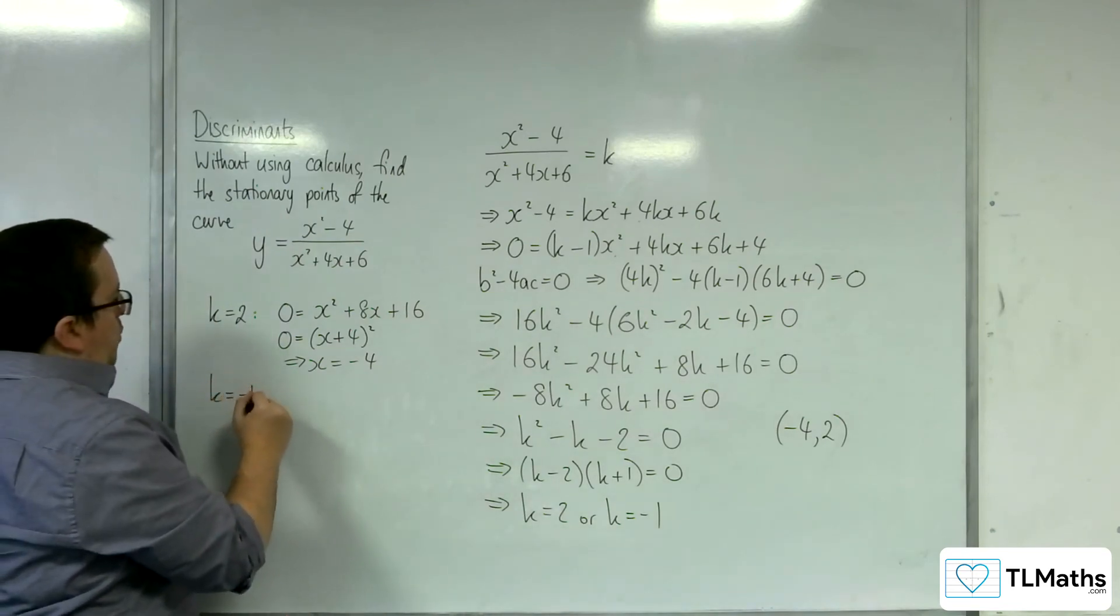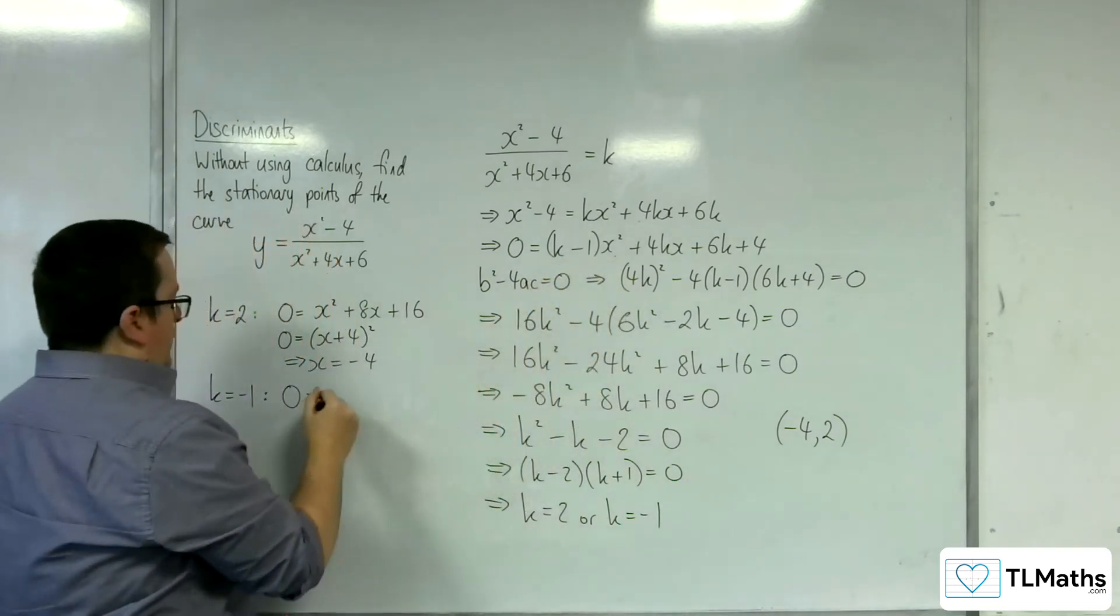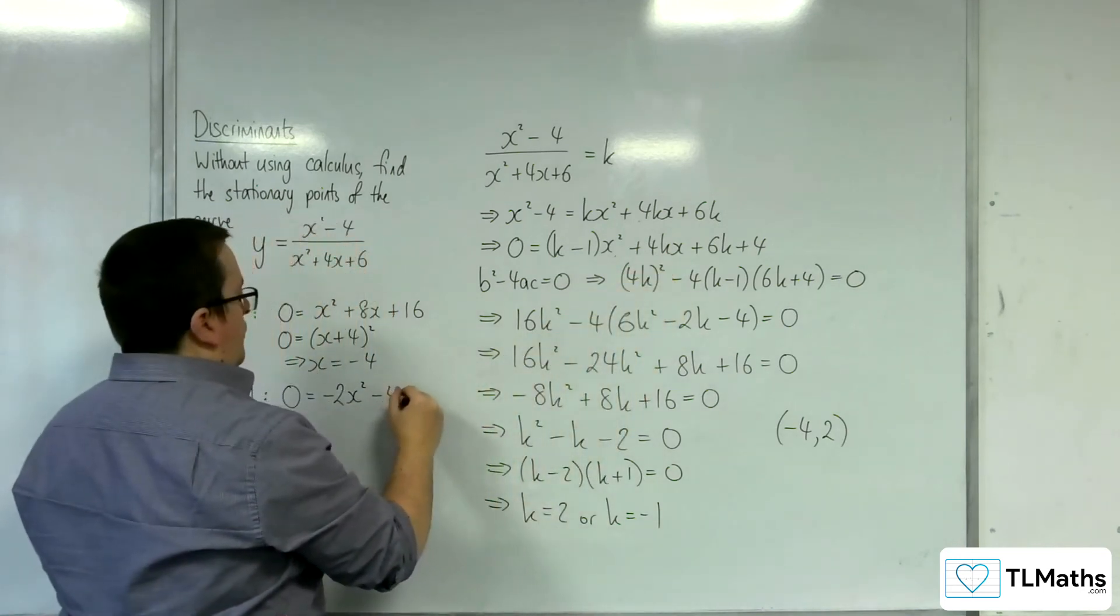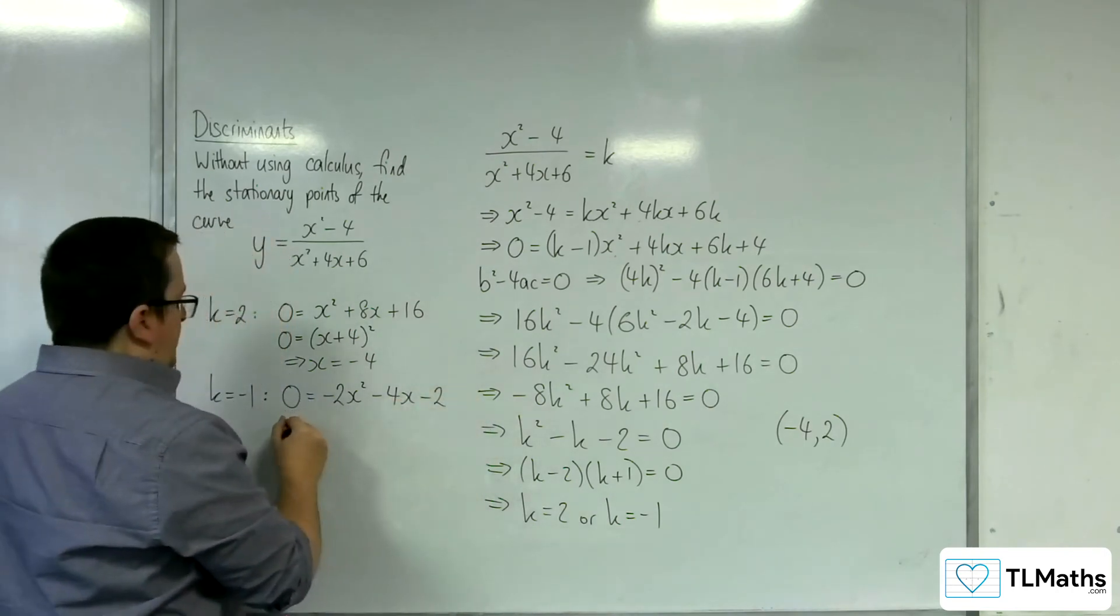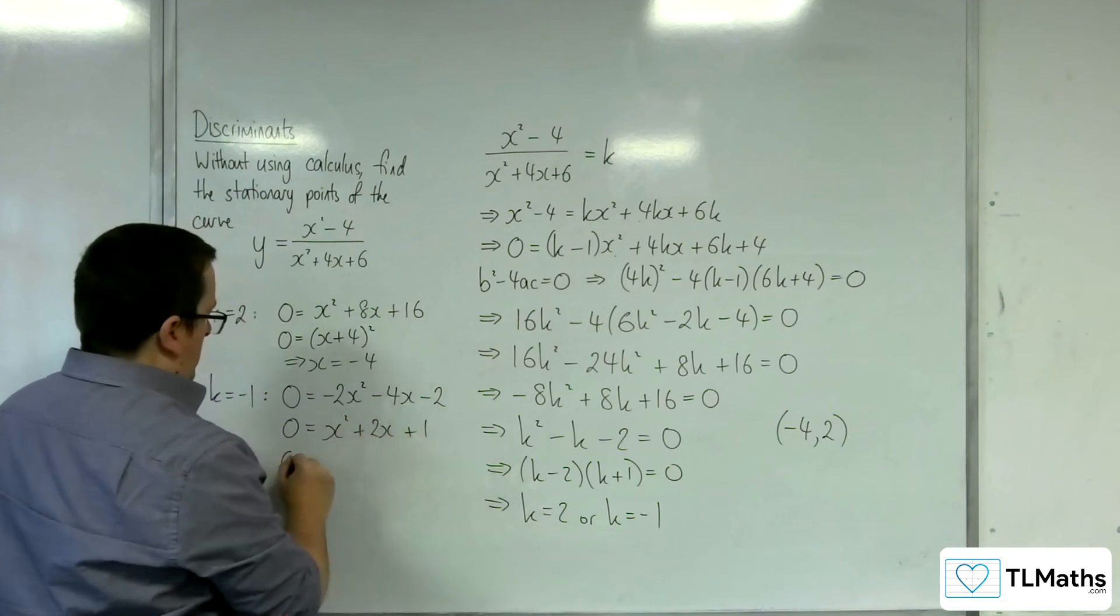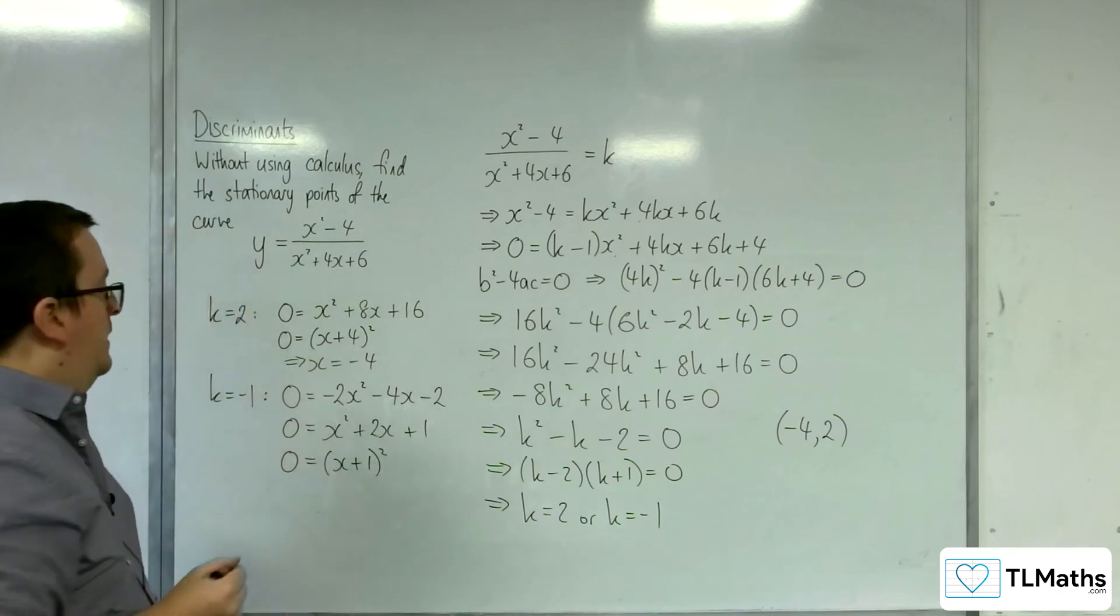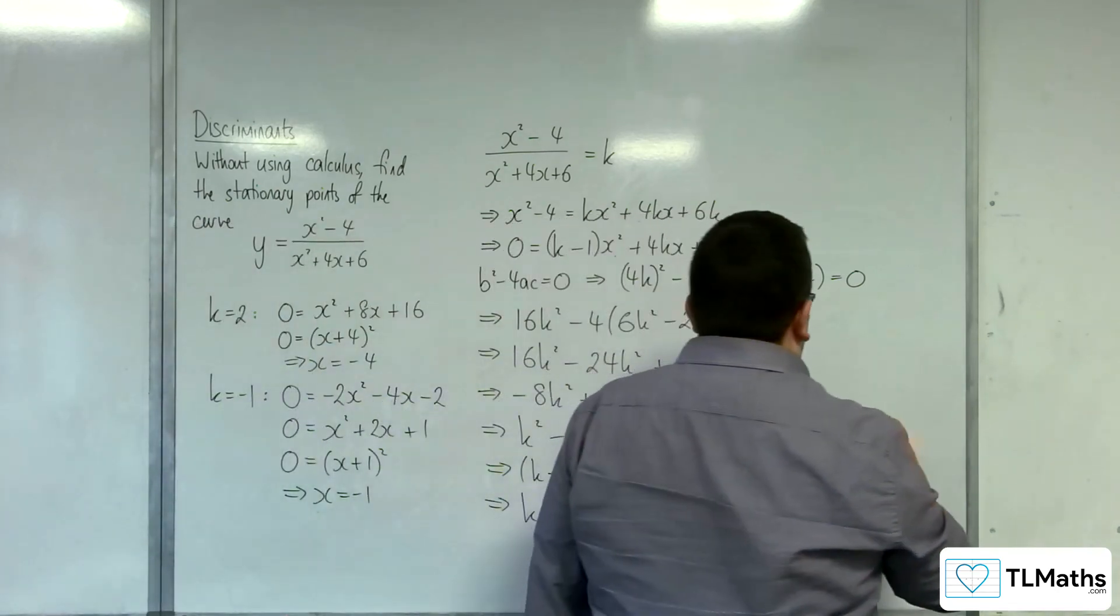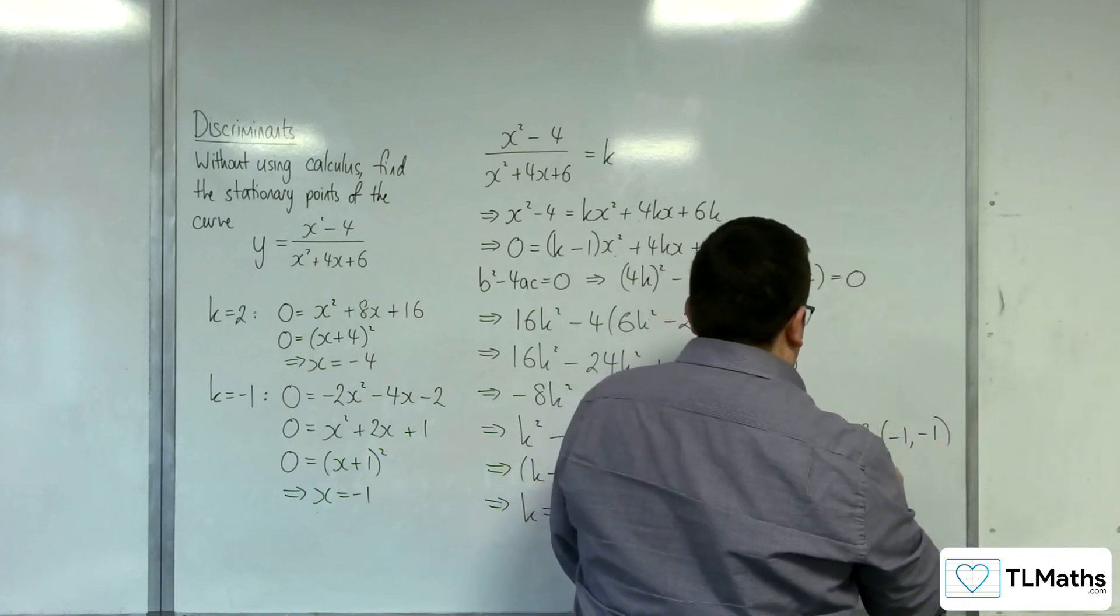And now with k equals minus 1, we do the same job. Minus 1, take away 1. So minus 2x squared. Then take away 4x. Then we've got minus 6 plus 4, so minus 2. If I divide through by minus 2, we get x squared plus 2x plus 1, which is x plus 1 squared. So you should get perfect squares here. And so x is equal to minus 1. So we have minus 1, minus 1 are stationary points.